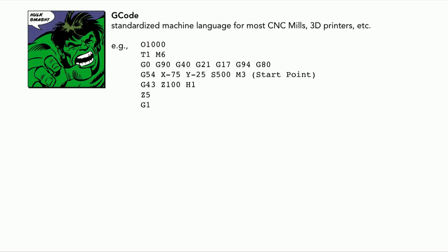G-code is a standardized machine language that's universal for most CNC mills and 3D printers. I describe it as the Incredible Hulk shouting at a 3D printer — it's very crude language. For example: T1 M6, G90, G40, G21, G17, G94, G80 — that's why it's called G-code — then G54, and then it starts giving you XY coordinates. While relatively crude, G-code is universal for most CNC mills and 3D printers; you can give the same G-code to something that cuts and something that extrudes and in theory it will run.